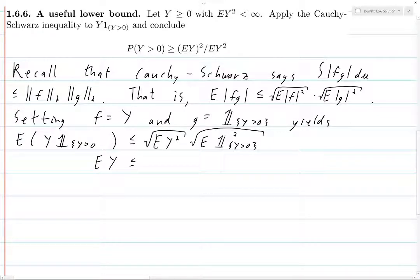And so this is actually precisely the expected value of Y, because the expected value of Y times the indicator function of Y equals 0 doesn't contribute anything to the value of the integral.